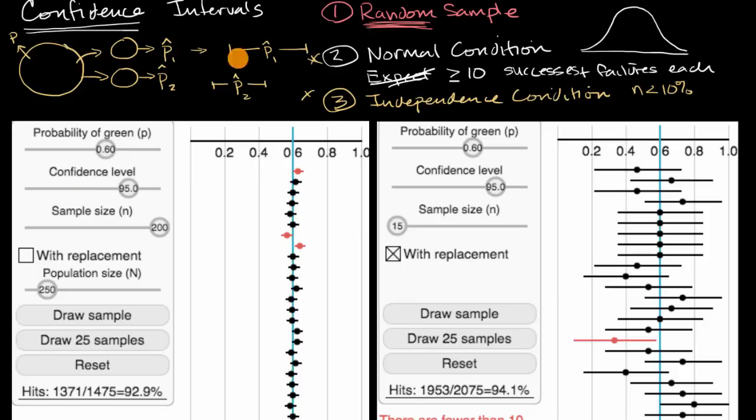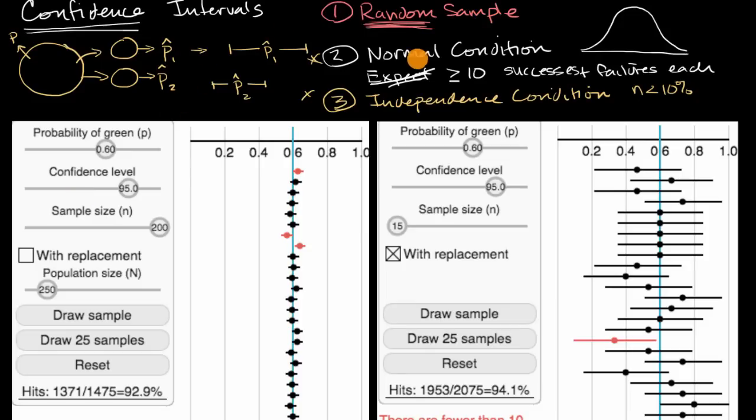And so the big takeaway: not being random will really skew things, but if you don't feel good about how normal the actual sampling distribution of the sample proportions are, or if your sample size is a fairly large chunk of your population and you're not replacing, and you're violating the independence condition, then your confidence level that you think you're computing for, when you make your confidence intervals, might not be valid.